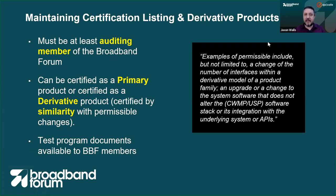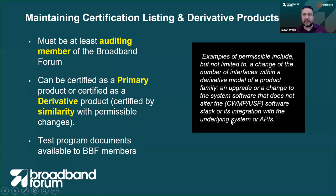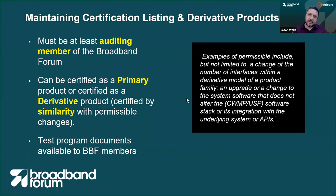The test program document says examples of permissible changes include, but are not limited to, changing the number of interfaces on a derivative model, or upgrading the system software in a way that does not alter the CWMP or USP software stack, nor its integration with the underlying system and APIs. During that process, it's actually the test agency that goes back and forth on whether something qualifies as a derivative product, and ultimately the Broadband Forum makes that judgment.